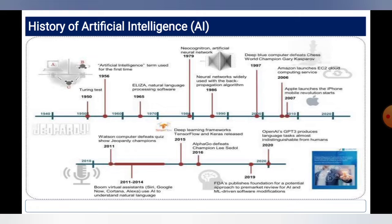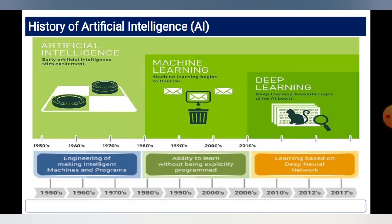Another timeline is explained through schematic diagrams. These diagrams explain a lot of things and highlight which years set the benchmarks for AI. In terms of history, the 1950s focused on engineering of intelligent machines and programs; from the 1950s to 1970s and 1980s to 2006, the focus was on the ability to learn without being explicitly programmed; and from 2010 to 2016, learning based on deep neural networks. This is a general historical mapping of artificial intelligence across different branches.